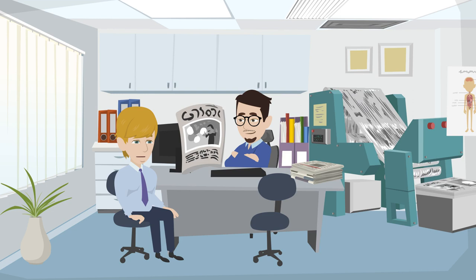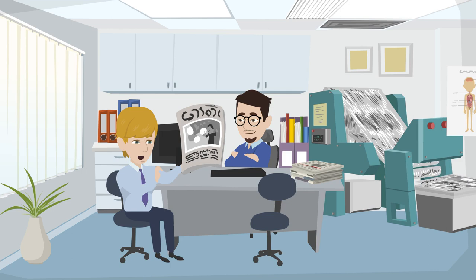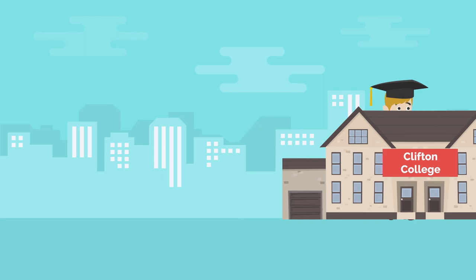His father was a journalist on a local newspaper. He was educated with an expensive education financed by mathematical scholarships. He studied at Clifton College and Oxford University between 1917 and 1926, where he focused on economics, math, philosophy and politics.